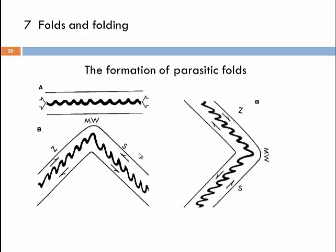Looking at a rotated version of this image, we can clearly see the typical Z shape that gave these folds their name, the S shape on the opposite limb, and the MW shape in the hinge. During the lecture, I presented a somewhat clearer graphic where the Z, S, and M shapes can be seen more distinctly.